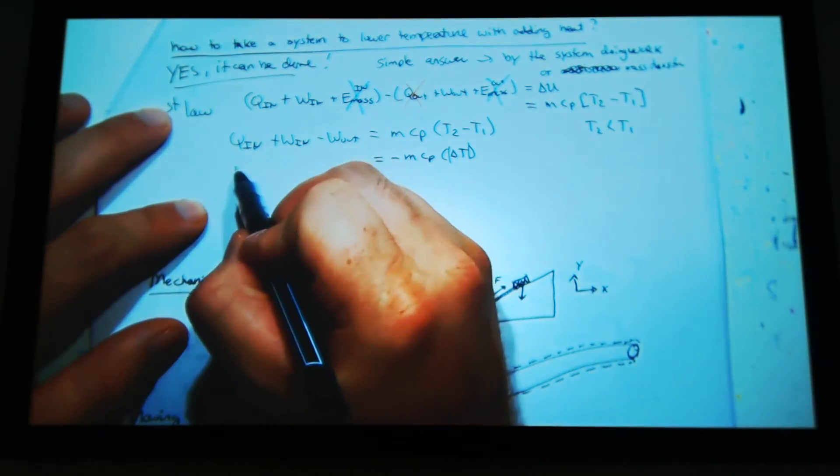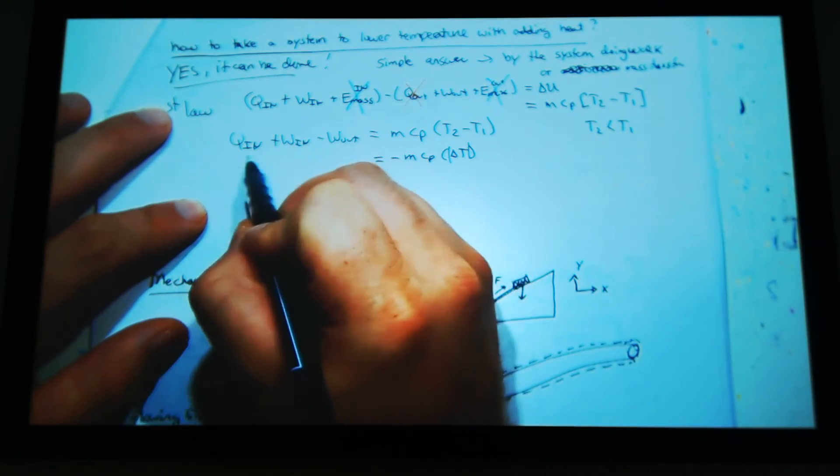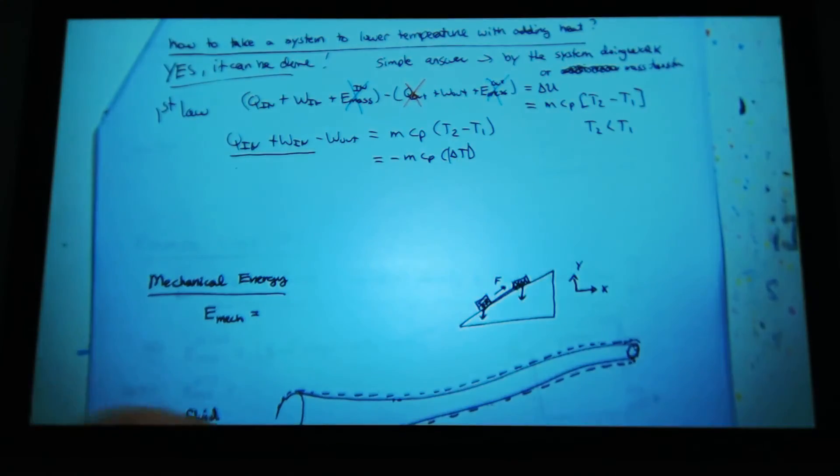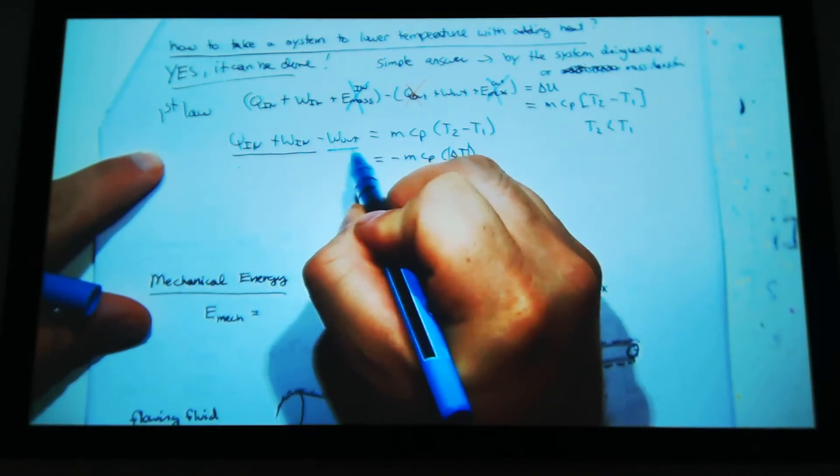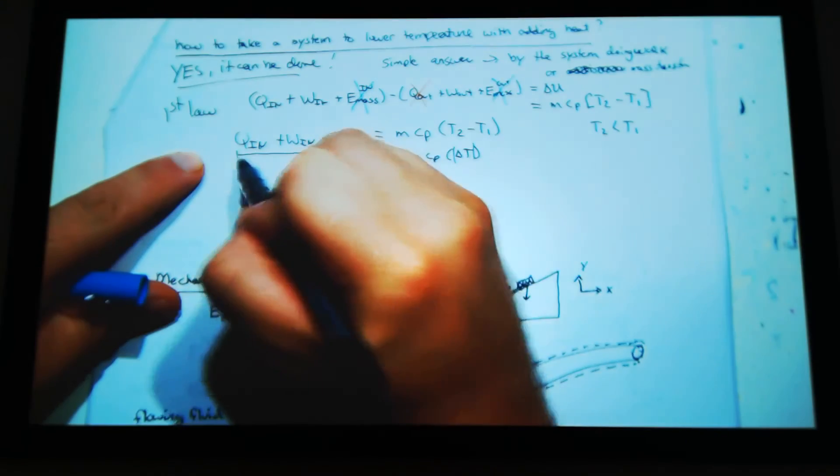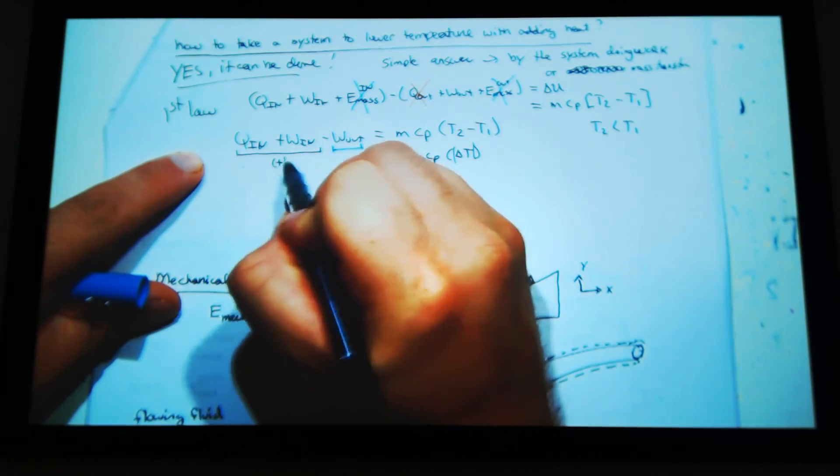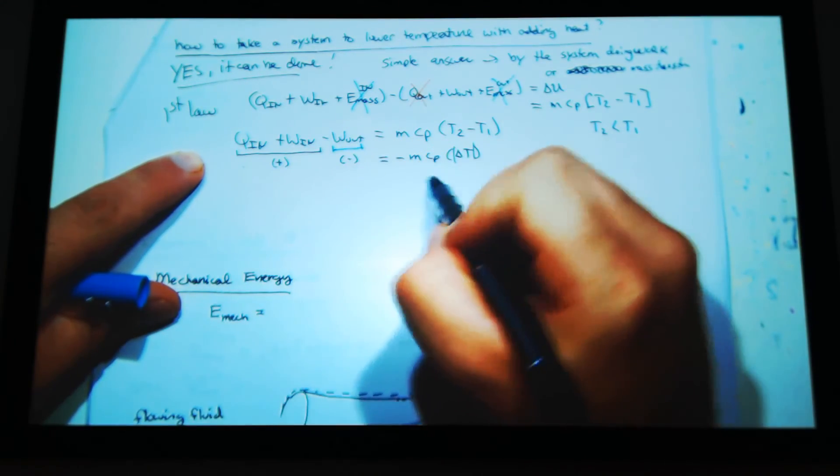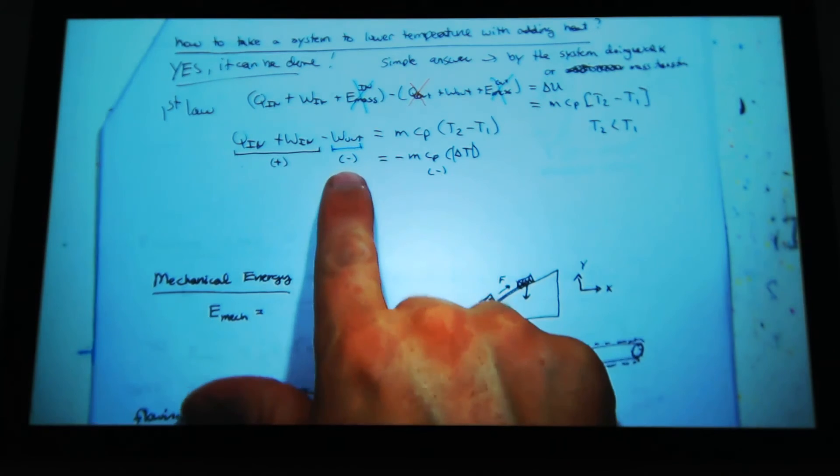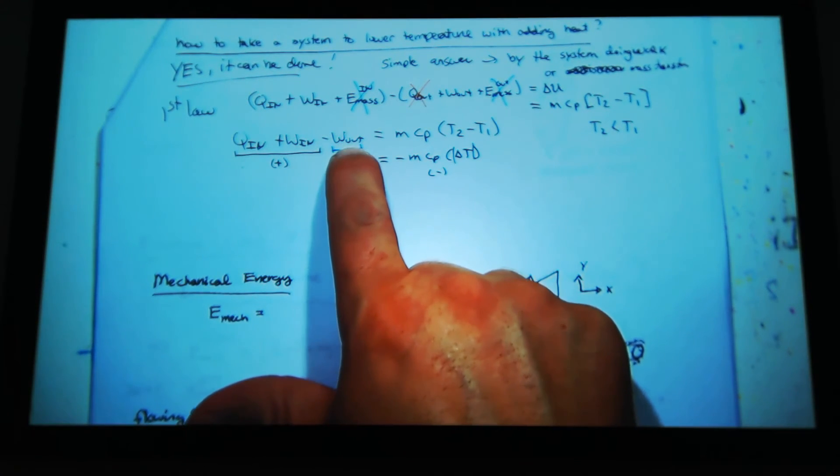So I'm adding heat. Let's break this down into parts which are positive and negative. So I have my positive part, my negative part, and here I have a negative part. And so the only way I can make these balance is my work out, my system has to do work.